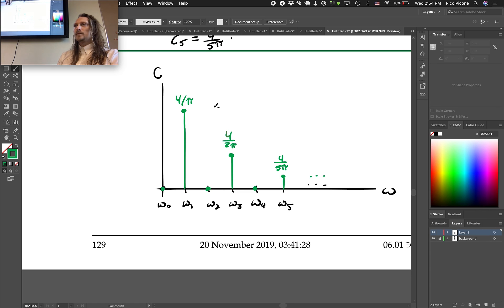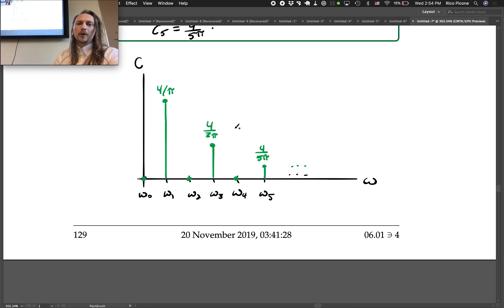4 over pi if amplitude is 1, and it would drop off and it keeps dropping off right. We're dividing by n as we go so it drops off pretty quickly. Okay any questions on Fourier series?